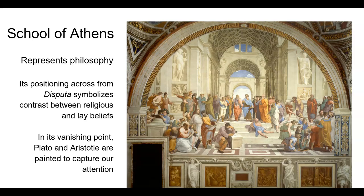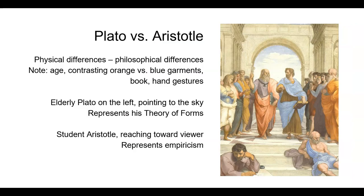In the painting itself, Plato and Aristotle are positioned in the fresco's vanishing point, which garners most of our attention. Their physical differences represent their differences in philosophy. Plato is seen pointing to the sky, said to symbolize his theory of forms, and Aristotle looks younger and is reaching toward the viewer, which conveys his philosophical emphasis on experience. Raphael painted these two figures to depict the complexity and clashing of philosophies, and cleverly finds a way to tie philosophies' reach into literature and law.